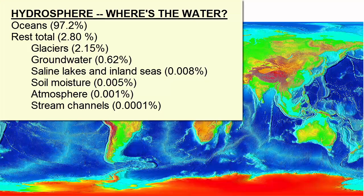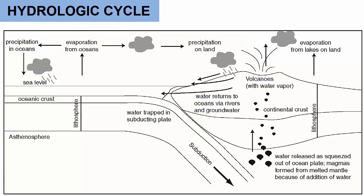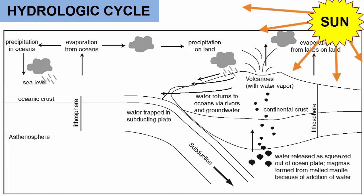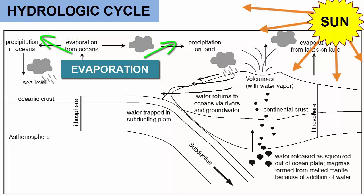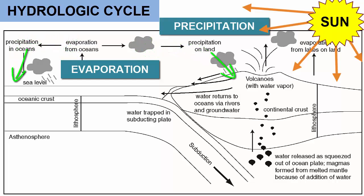How does water move around between all these different reservoirs? To answer that question, we need to review the water cycle, or hydrologic cycle, which you all probably first learned about back in grade school. What drives the hydrologic cycle? The sun. When it comes out, evaporation of water occurs. That evaporated water is carried in wind currents around the planet, where eventually it cools so much that water is forced out as precipitation or rain.